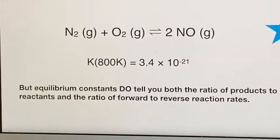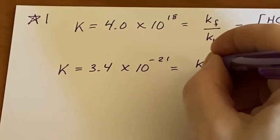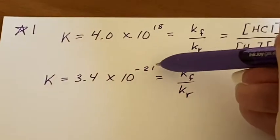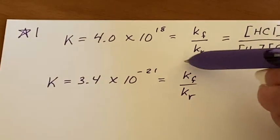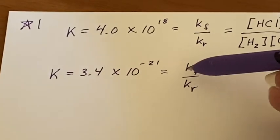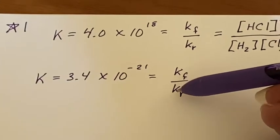Well, let's see what that looks like. It's still going to be Kf over Kr. Well, in this case, since this is minus 21, it means the forward reaction is very, very small compared to the rate of the reverse reaction,